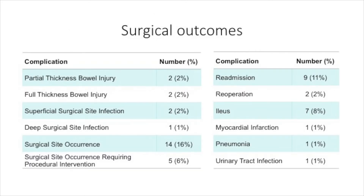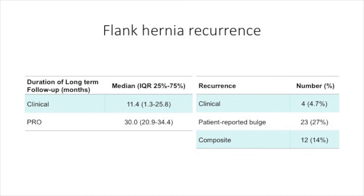The most frequent complications were surgical site occurrences, of which five required an intervention. One additional patient required re-operation in the 30-day post-operative window for an early recurrence. Patients were followed clinically for a median of 11.4 months, over which time there were three additional recurrences. Patient reported outcomes were collected for 62 patients at a median of 30 months, during which time 23 patients reported a bulge on their most recent PRO. The composite recurrence rate was 12%, which included the four known clinical recurrences and eight patient-reported bulges with no subsequent clinical evaluation.